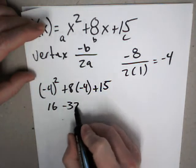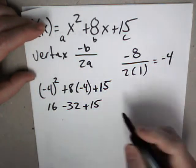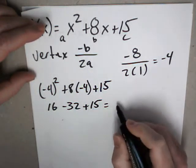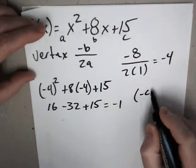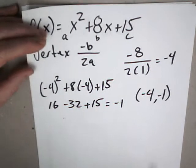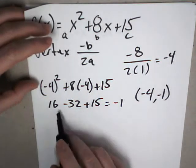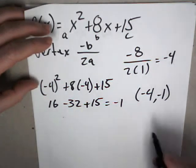So you plug it back in. 16 minus 32 plus 15 would give you negative 1. Yeah, negative 1. I'm thinking that would be negative 4, negative 1, just off the top of my head.